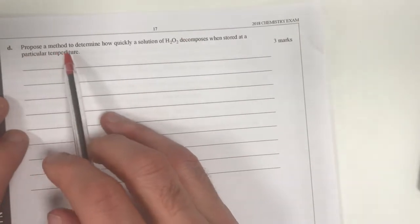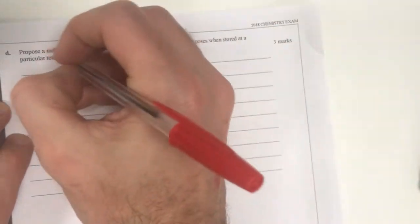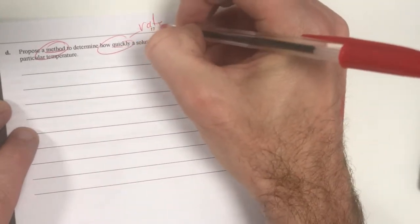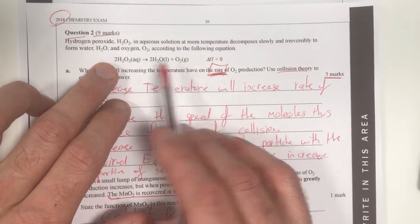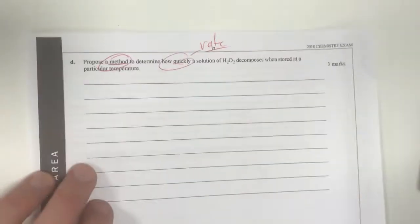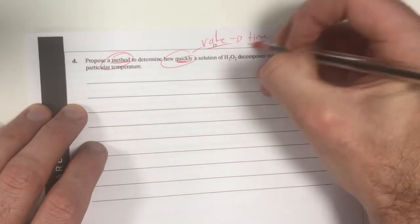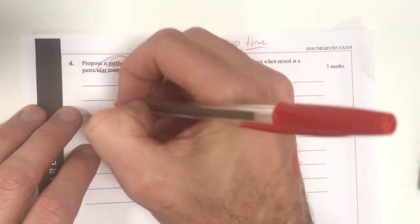Moving on to part D. Propose a method to determine how quickly a solution of H₂O₂ decomposes when stored at a particular temperature. So I need a method, step-by-step method, for looking at how quickly - so I'm looking at rate of reaction. To do that, I need to look at what I can measure. I can measure how much oxygen is produced, or if a gas is produced, I can actually measure mass loss. I'm going to go with oxygen produced. How quickly means a rate, so that means about time. I need to have some measurement of time within my answer.